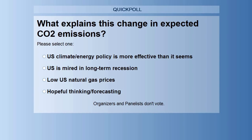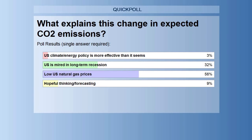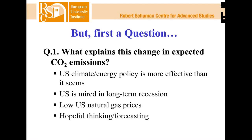The poll is now closing. Most of you indicated low U.S. natural gas prices with 56%, and 3% for much slower economic growth. A minority think climate policy is more effective, and some attribute this to hopeful forecasting. Let's go on with the presentation.